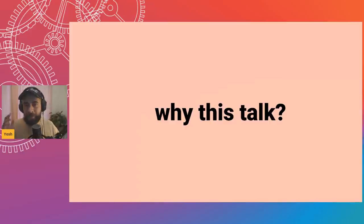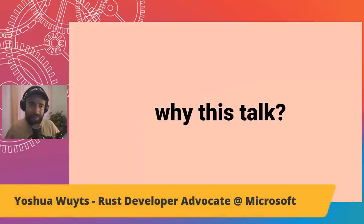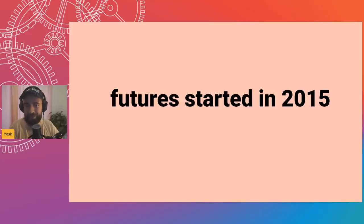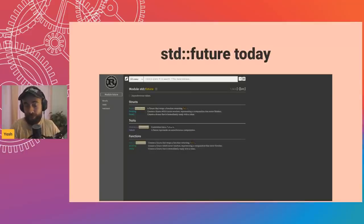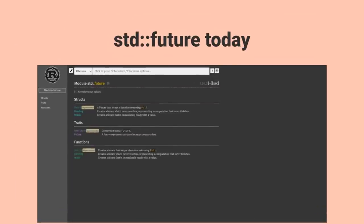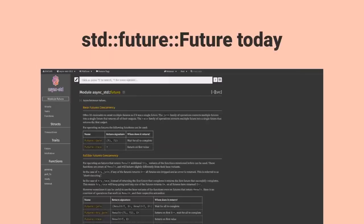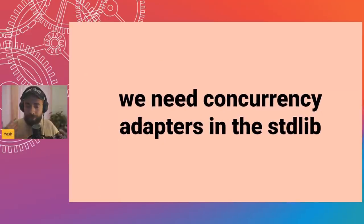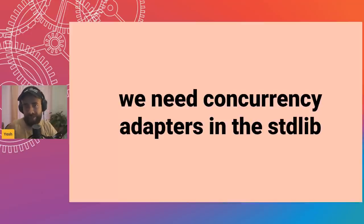Why this talk? We're talking about futures and async in Rust. It started in 2015, or maybe 2008, depending on where you start counting. The standard library's future support today looks like just a couple of traits and three functions with barely any description — not much. We're trying to expand on that. The Future trait itself only has a single method, and we want to build these traits out and make it a richer experience, moving past an MVP stage.